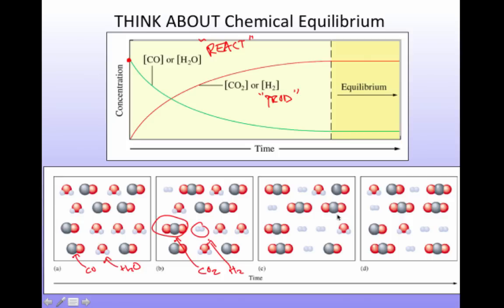As the reaction proceeds further, I get more and more H2 and more and more CO2. Until finally when I'm done, there's only a little bit of water and a little bit of CO left, and mostly I have H2 and CO2. But importantly, at equilibrium I still have a mixture—that is, I still have some reactants and some products—but now the concentrations are no longer changing.